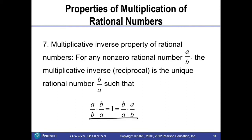We have a new property: the multiplicative inverse property of rational numbers. If I have a rational number a over b, the multiplicative inverse — also known as the reciprocal — is the unique rational number b over a, such that a over b times b over a equals one. The reciprocal is found by flipping the fraction.